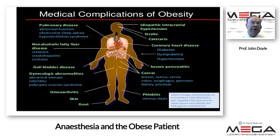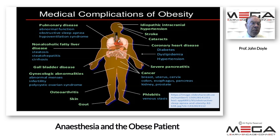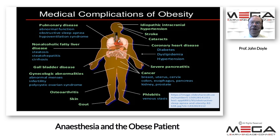The medical complications of obesity are well known: they affect pulmonary disease — for example, obstructive sleep apnea and hypoventilation syndrome — as well as problems with fatty liver disease, gallbladder disease, osteoarthritis, phlebitis, predisposition to cancer, predisposition to pancreatitis, and of course coronary disease, especially that related to diabetes. These medical complications explain part of the interest in bariatric anesthesia and surgery.